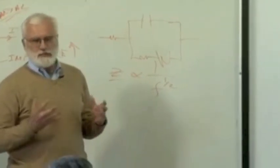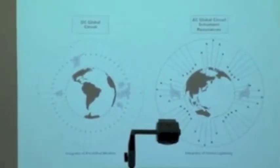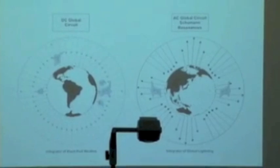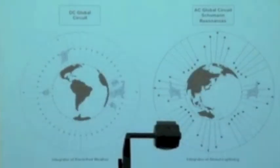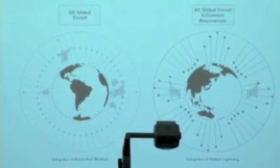Then you have a much more complicated phenomenon, the AC global circuit, which is Schumann Resonances. It involves standing waves in the Earth ionosphere cavity. The time it takes light to go around the world is an eighth of a second, and so the corresponding frequency is eight cycles per second. That's the fundamental mode of Schumann Resonance.